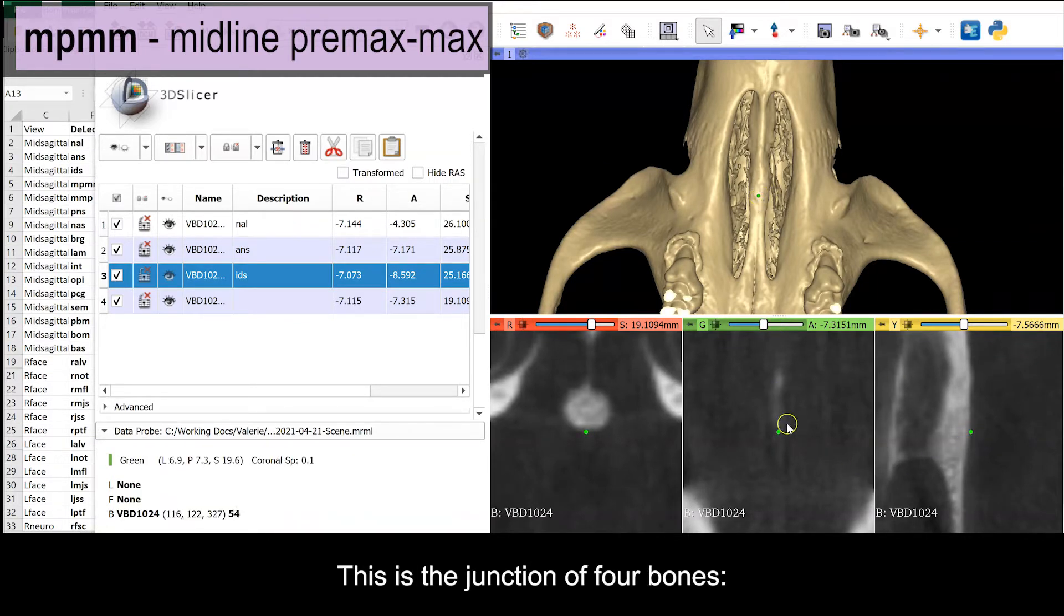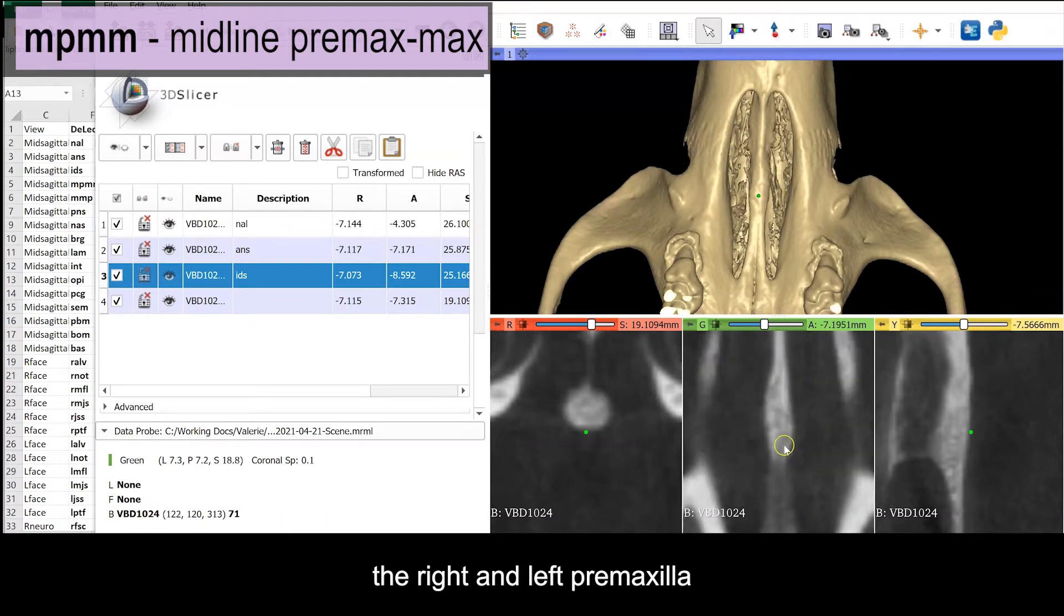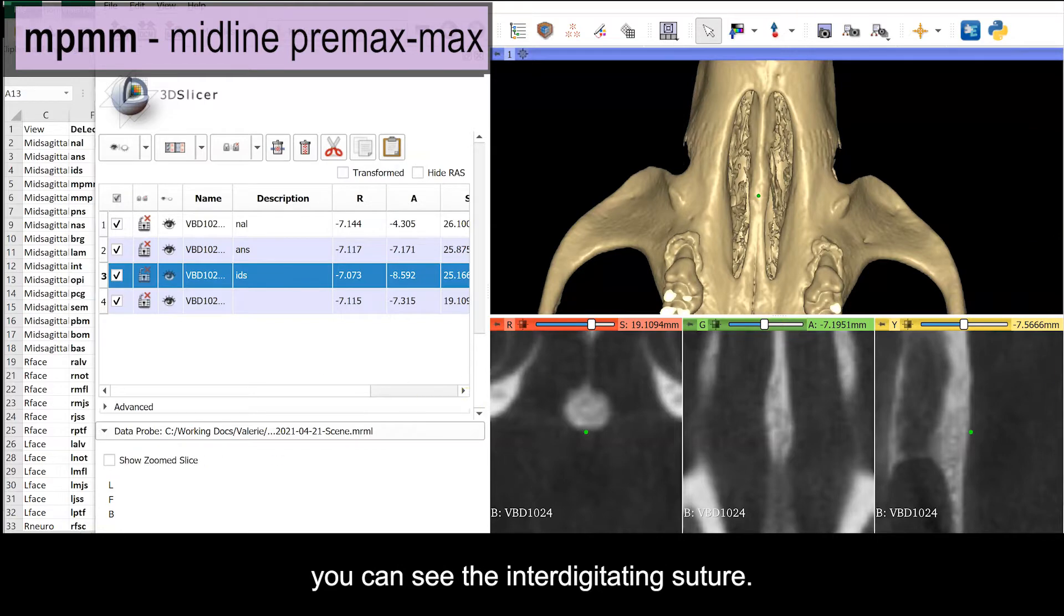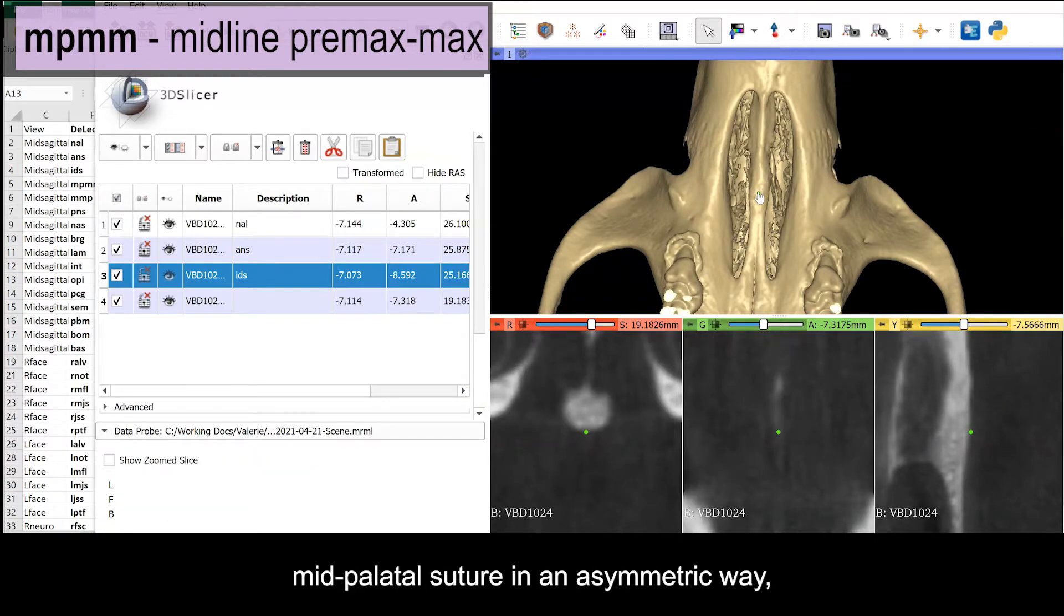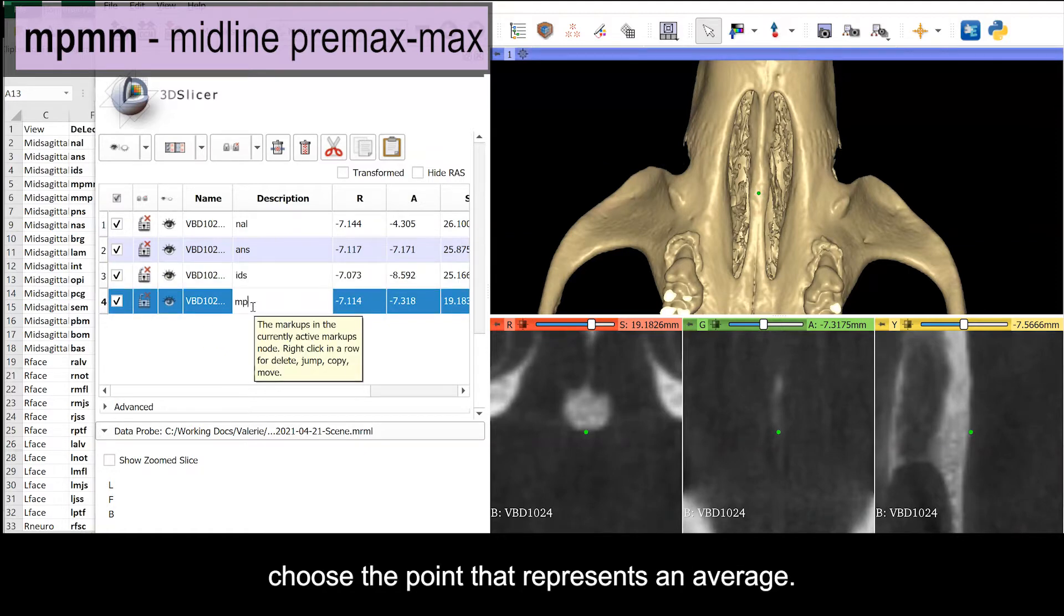This is the junction of four bones. It's the right and left premaxilla and the right and left maxilla. Use the orthogonal views to confirm that the landmark is placed in the mid-sagittal plane. In the sagittal view, you can see the inter-digitated suture. If the right and left sutures are hitting the mid-palatal suture in an asymmetric way, choose the point that represents an average.